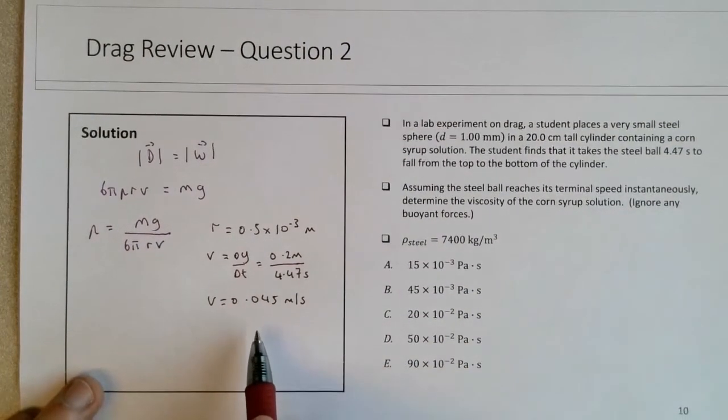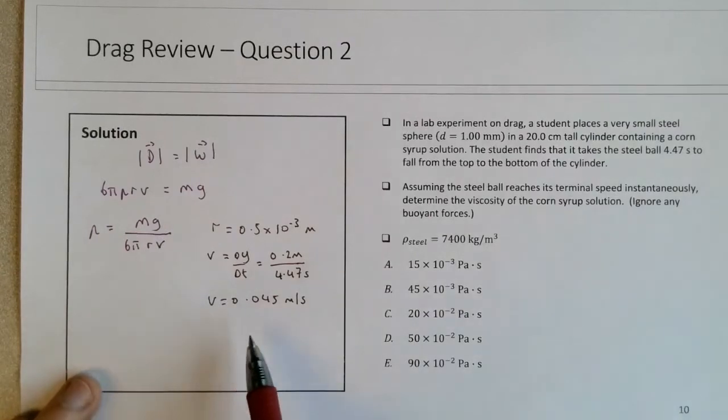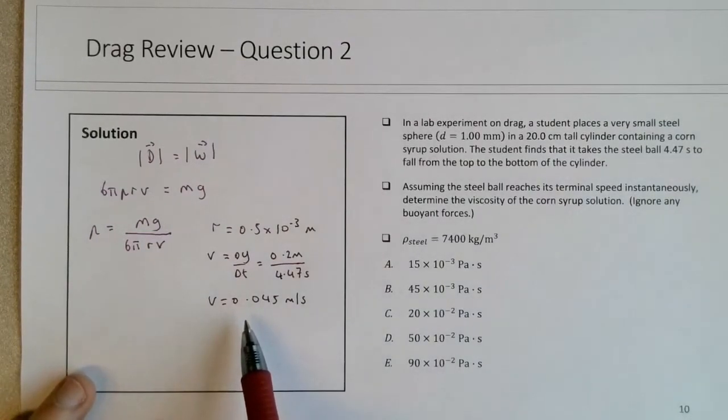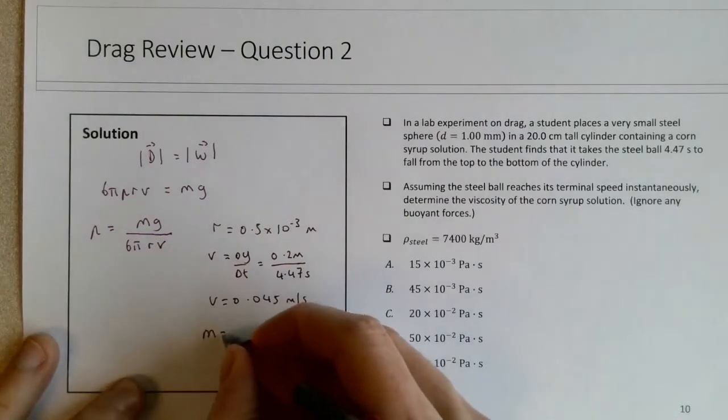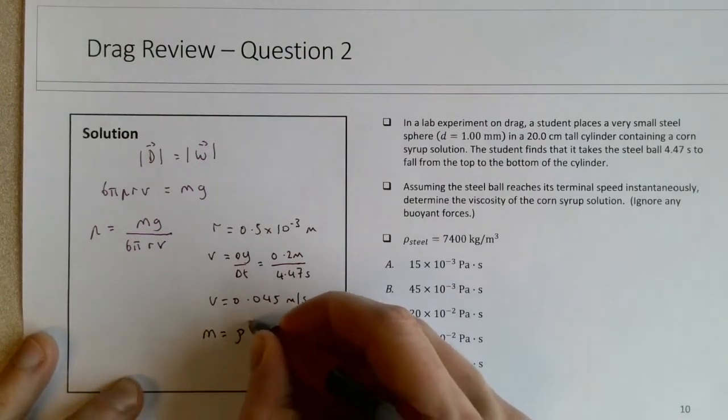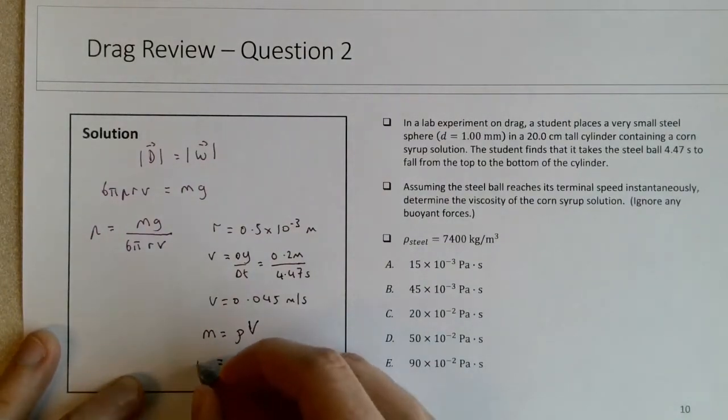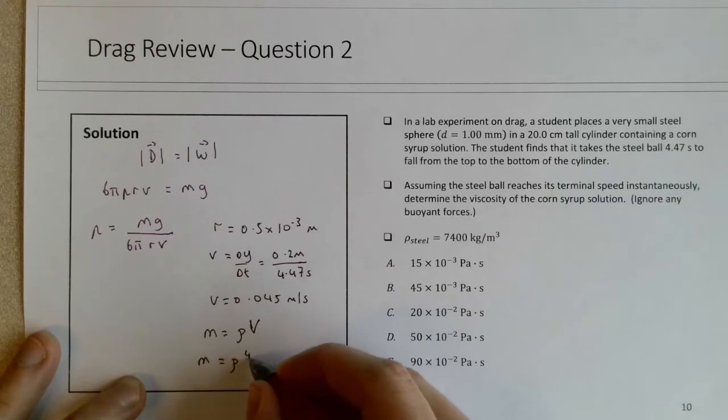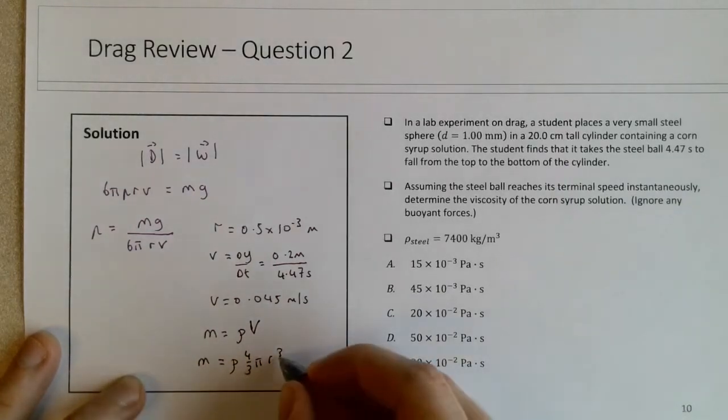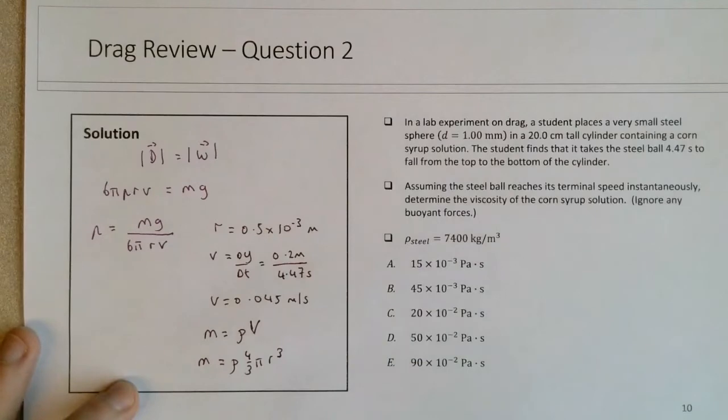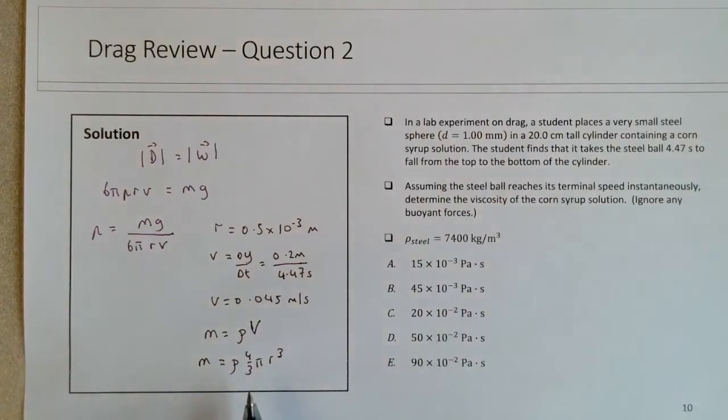So again, it's moving very slowly and it's very small, so this, again, is what we can think of as a low Reynolds number drag question. And then the mass is a little more challenging. The mass is going to be equal to ρ times the volume, because ρ is mass over volume. It's a sphere, so the mass will be the density times 4/3 πr³. This will be a very small mass given just how small the bearing is, even though the density is quite large.